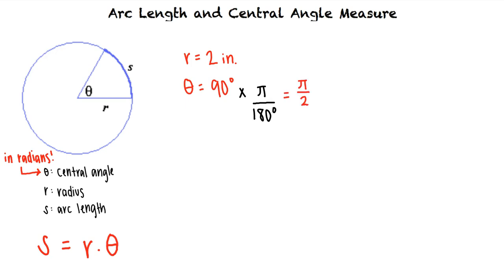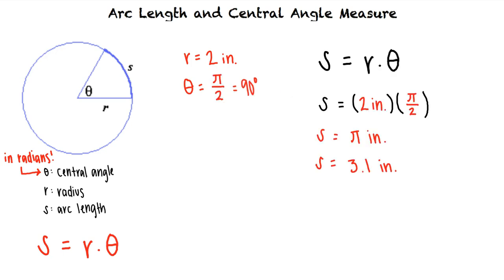Now we can substitute pi halves for theta in our equation and solve for S. Rounding to the nearest tenth, we see that the arc length is 3.1 inches.